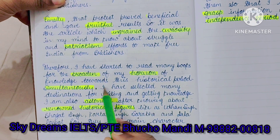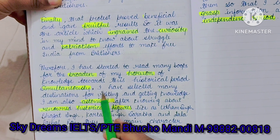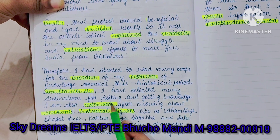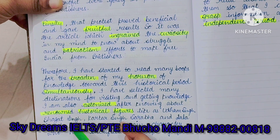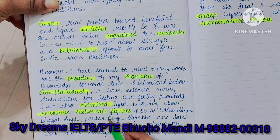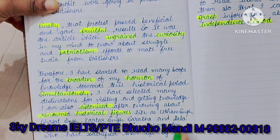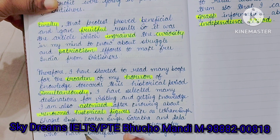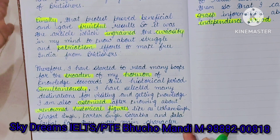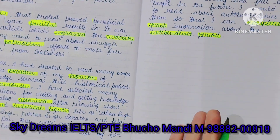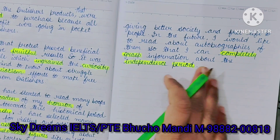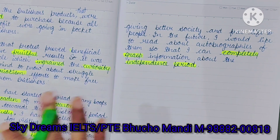Therefore I have started to read many books to broaden my knowledge towards the historical period. Simultaneously, I have selected many destinations for visiting and getting knowledge. I am also astonished after knowing about the renowned historical figures like Udham Singh, Bhagat Singh, Kartar Singh Sarabha, and Lala Lajpat Rai, who were main characters that sacrificed and laid down their lives for the sake of independence and for the betterment of society.